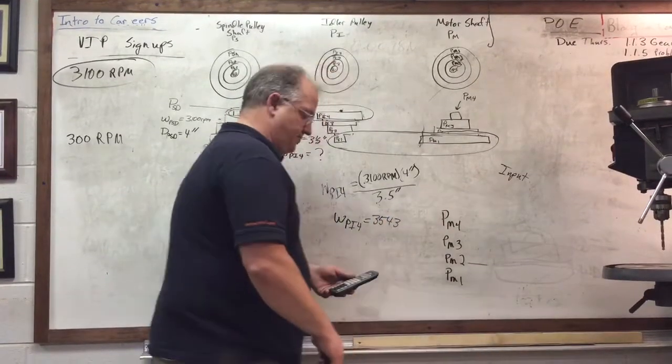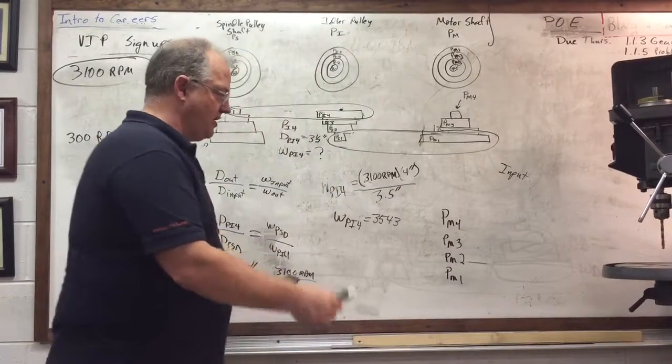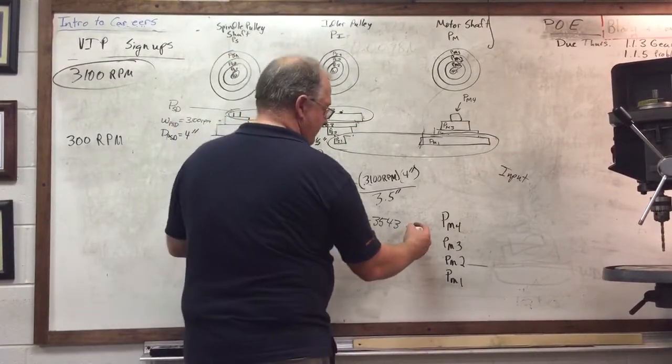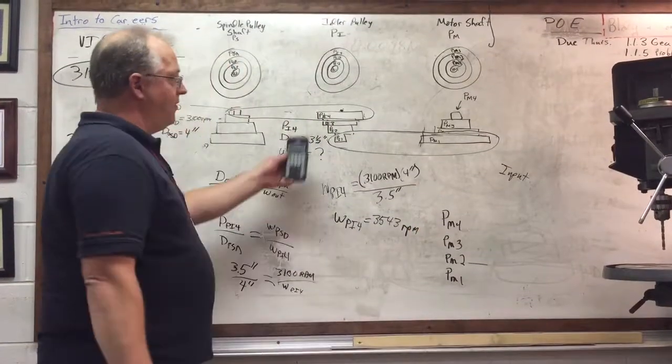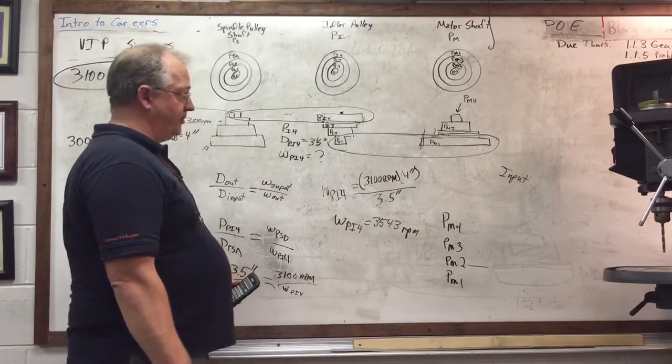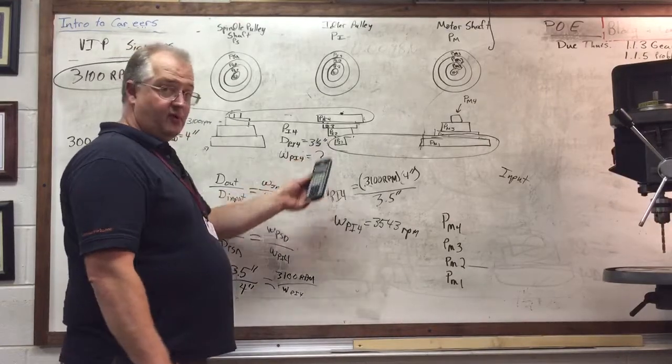It comes out to 42.857, but we'll just round up to 3,543 rpm. That is what this idler pulley will be rotating.